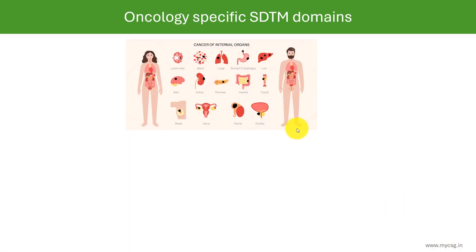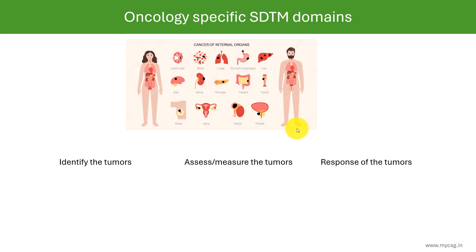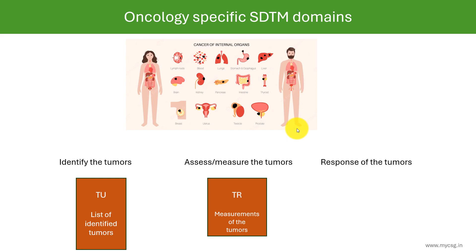Hello everyone, welcome back to this video series on clinical trials programming. In one of the previous videos we saw that there are few oncology-specific SDTM domains in the SDTM implementation guide. We will take a quick recap of those three domains: the TU domain stores the list of tumors identified, the TR domain stores measurements of those tumors, and the RS domain stores the response of those tumors to the study treatment.